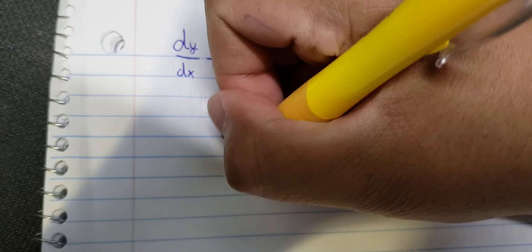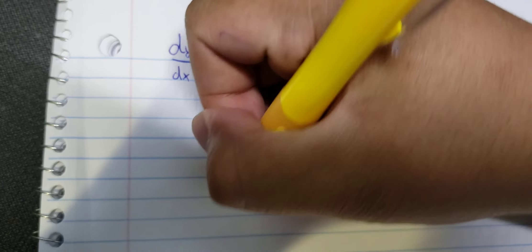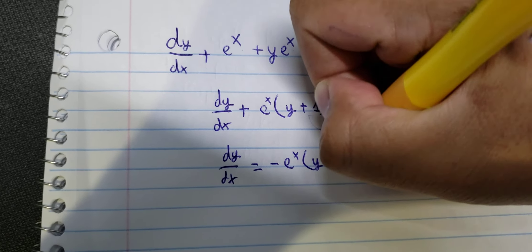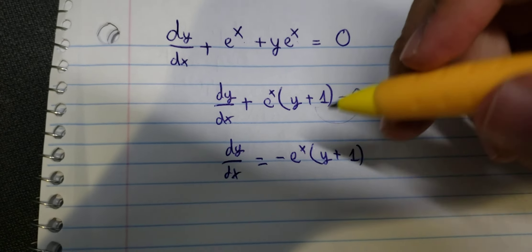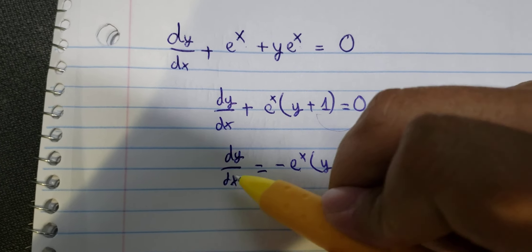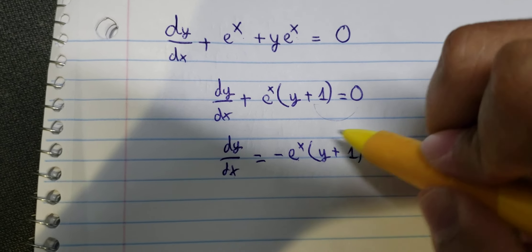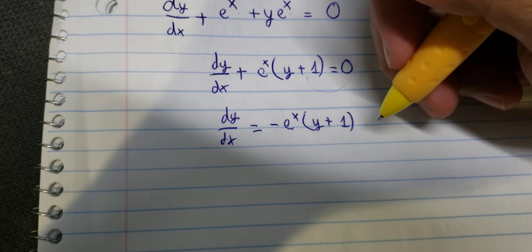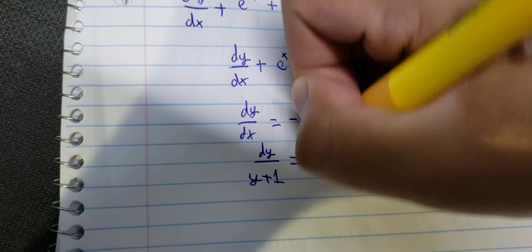So e to the power of x I will move to the left, ds move to the right, y plus 1 move to the left, and this one you got dy over y plus 1.